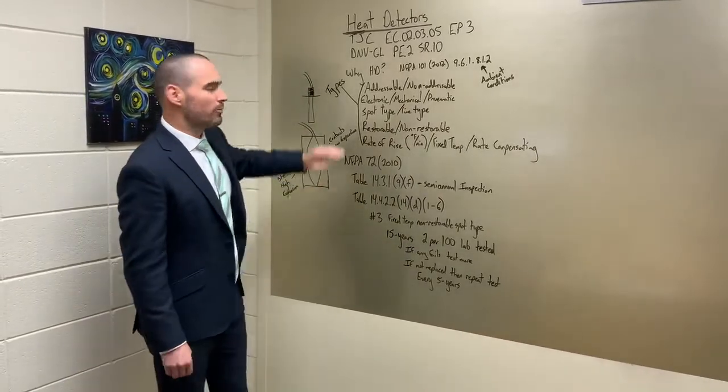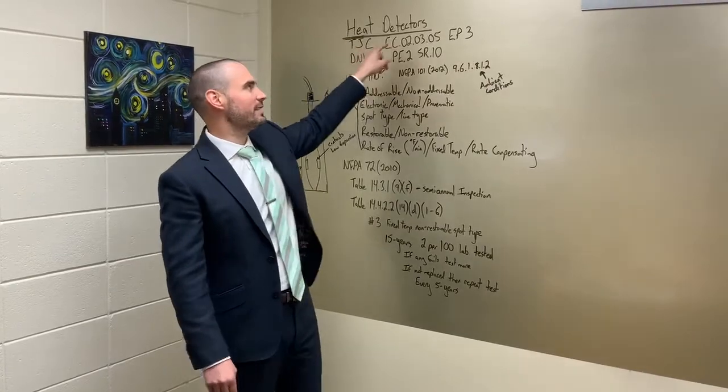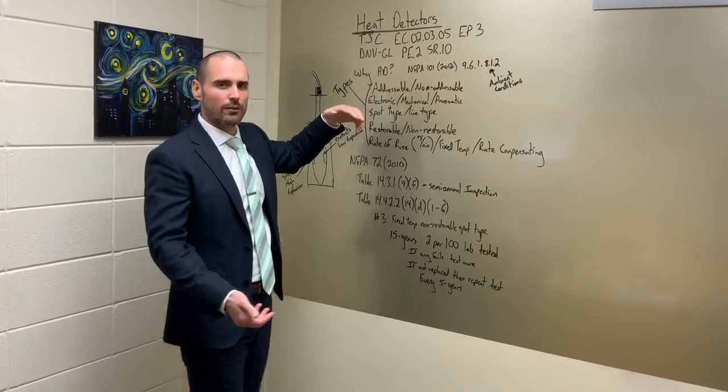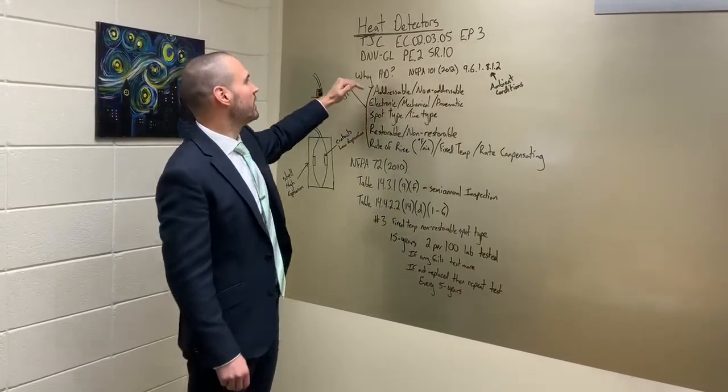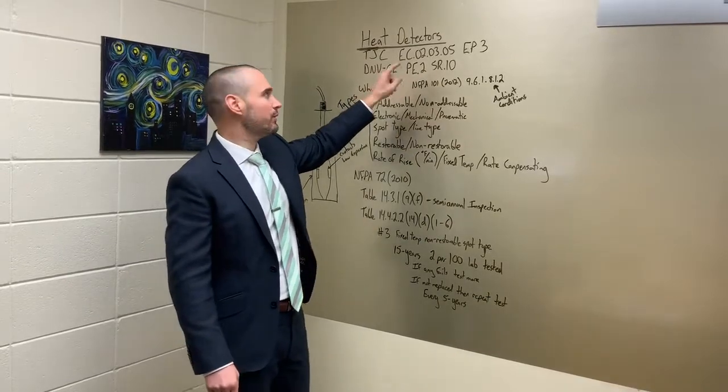So a little bit of compliance information. Joint Commission Regulated Facilities, EC235, EP3, still in that series. This may be our last one for our initiating devices. DNV, GL, PE2, SR10.